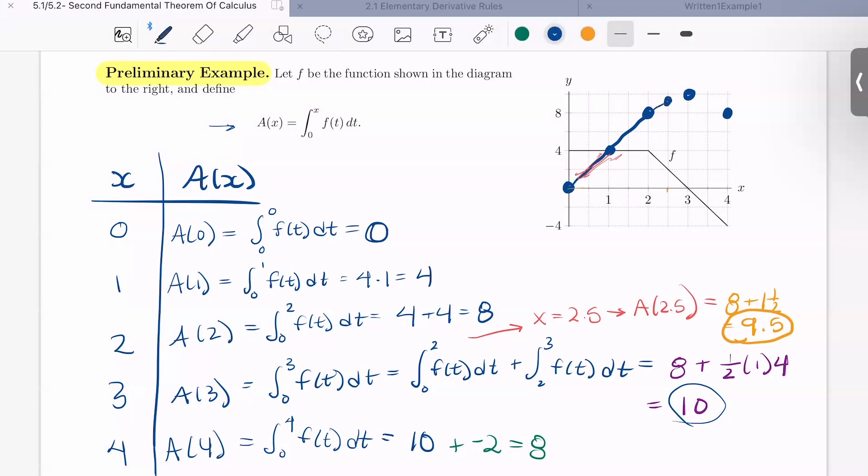So the point then on our a of x function when x is 2 and a half would be up here at 9 and a half. So we see that we have 8 and 10. So 9 would be halfway and 9 and a half would be halfway further. It would be right about here. So we actually see that our function kind of curves slightly. And then similar story on the way down. And you can compute that out, find the a of x value when x is 3 and a half. You can also see visually what's happening here. We have a little bit less area that we're subtracting, and then we're subtracting even more area. Okay, so there is our a of x function drawn out on our graph.